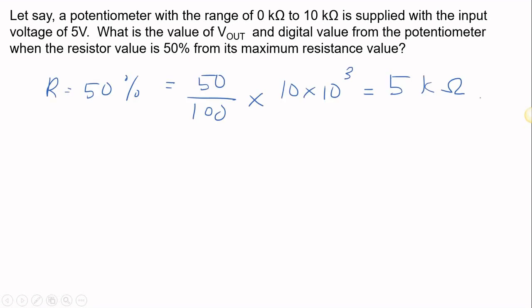From this calculation, when resistance is 50% from its maximum value, it is actually 50 over 100 times 10 kΩ of resistance, and you will get 5 kΩ.